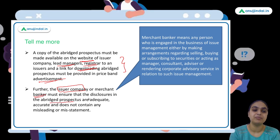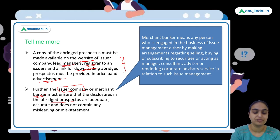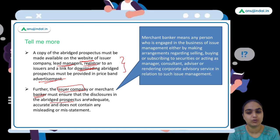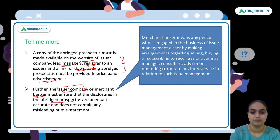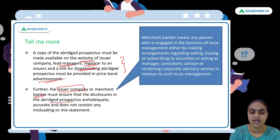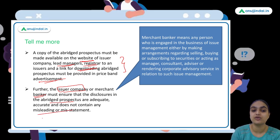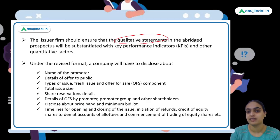A merchant banker, as defined by SEBI, is the one who helps manage the entire issue — acting as consultant and advisor. When the abridged prospectus is prepared, the merchant banker or issuer company must ensure all shared information is correct and accurate, with no misleading statements about the company.